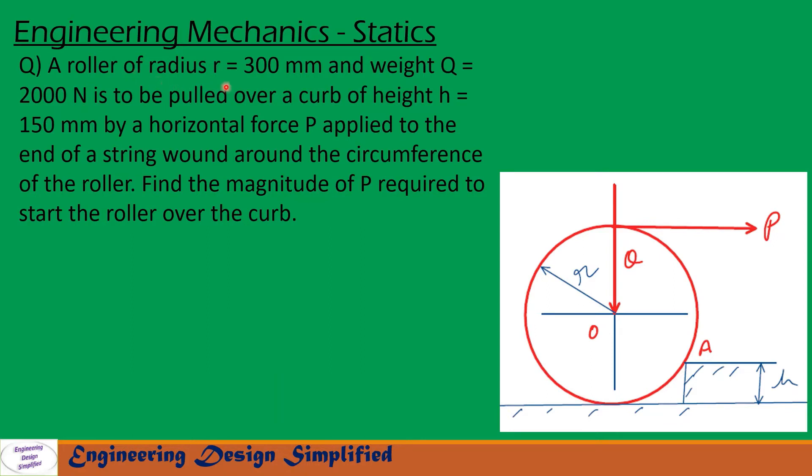Today's problem: a roller of radius r = 300 mm and weight Q = 2000 N is to be pulled over a curb of height h = 150 mm by a horizontal force P applied to the end of a string wound around the circumference of the roller.